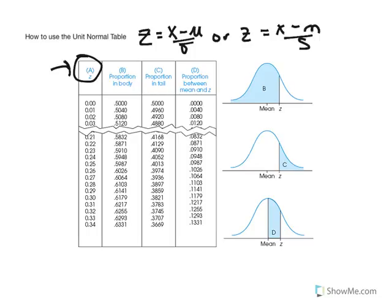Please note that all z-scores are reported two digits to the right of the decimal. So when you are computing a z-score, make sure you adhere to standard rounding rules. The next column, column B, represents proportion in the body.